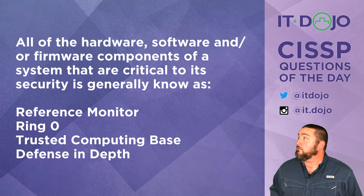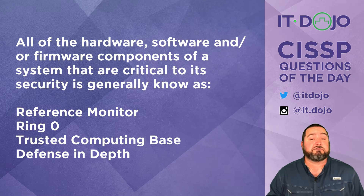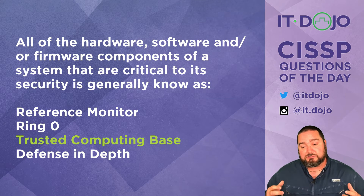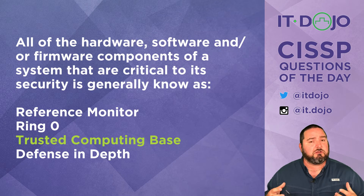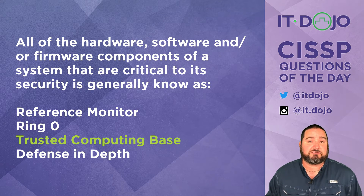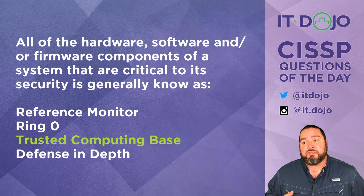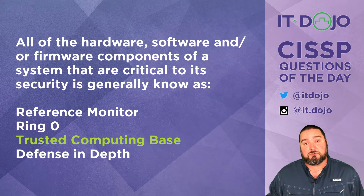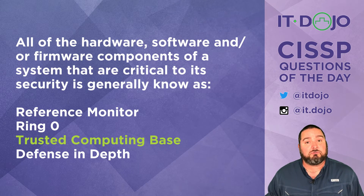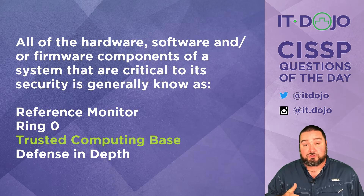The next answer is the Trusted Computing Base — that is the right answer. The TCB, or Trusted Computing Base, is the kernel of the system as well as all of the trusted processes that contribute to the critical security aspects of the system. These are the things we rely upon the most for the system to be trustworthy. We want them to be as small in number as possible, verifiable, and obviously trustworthy.